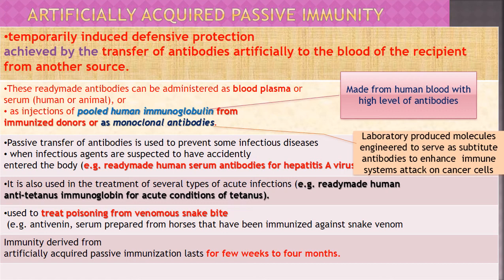Antibodies are administered as injections of pooled human immunoglobulin — made from human blood with high levels of antibodies. Blood from thousands of people is collected and antibodies are obtained from those who have already been immunized. So injections of pooled human immunoglobulin come from immunized donors.